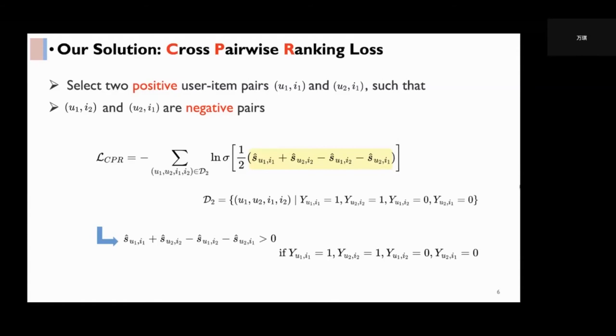So CPR loss encourages the sum score of these two positive pairs to be higher than that of the two negative pairs. We will explain why this ranking objective is unbiased.